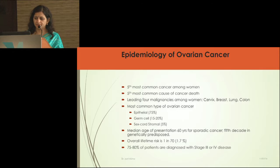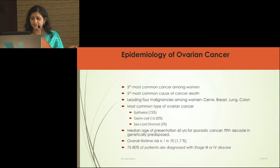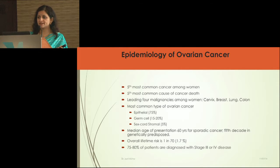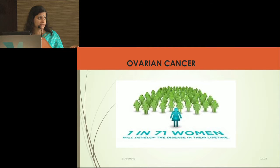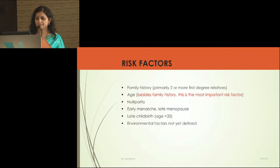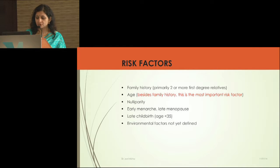Coming to the main topic — epidemiology of ovarian cancer. This is the fifth most common cancer among women; the commonest cancers are cervical, breast, lung, and colon. The median age for sporadic cases is around 60, while hereditary cases present younger, around the fifth decade. One in every 71 women has a chance of developing ovarian cancer. Risk factors include family history, age, nulliparity, early menarche, late menopause, late childbirth, and environmental factors which are not yet well defined.